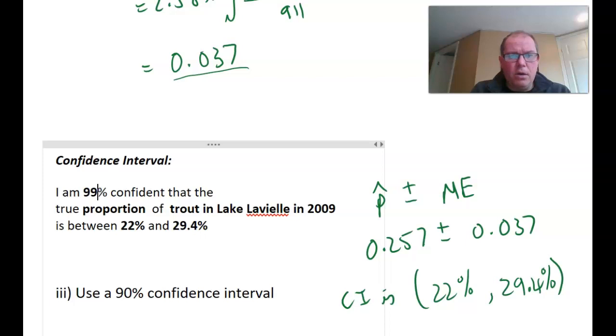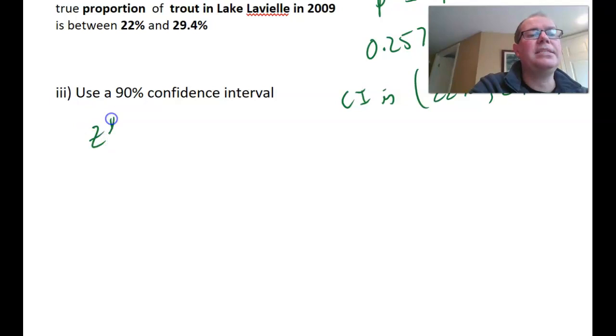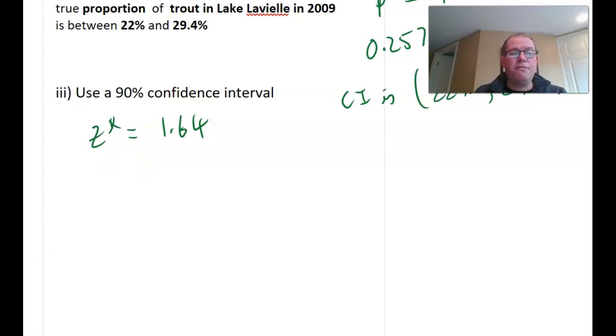Have a think. Which interval do you prefer? The 95% one or the 99% one? Do you like more confidence and a wider interval in this example, or less confidence and a narrower interval? And you've guessed it. It's your turn now to do the 90% confidence interval. For the 90% confidence interval, take the Z star value as 1.64. Pause the video, off you go.